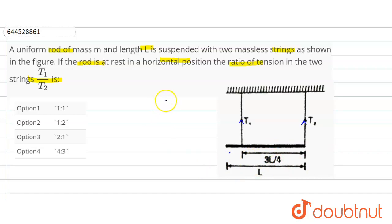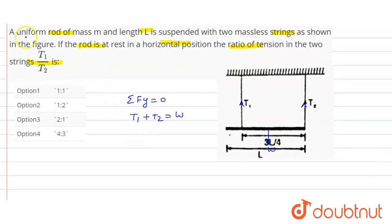For vertical equilibrium here, summation of force in y direction is equal to zero. So in this direction, force T1 plus T2 is equal to W. See, taking moment about point O.